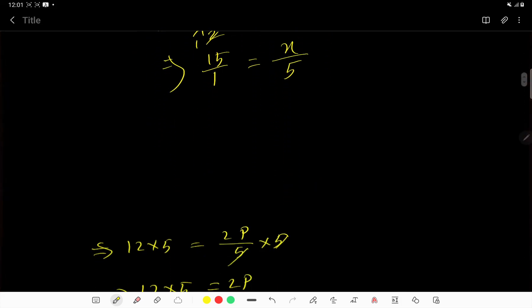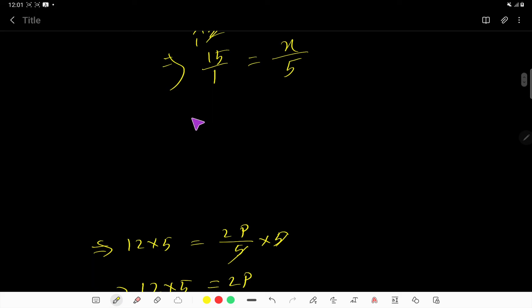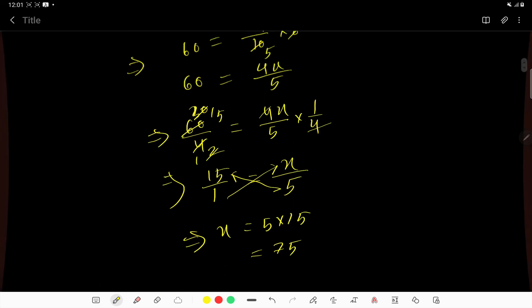Now multiply these together, so you're getting X equal to 5 times 15. 5 times 15 means 75, so your answer is 75 percent.